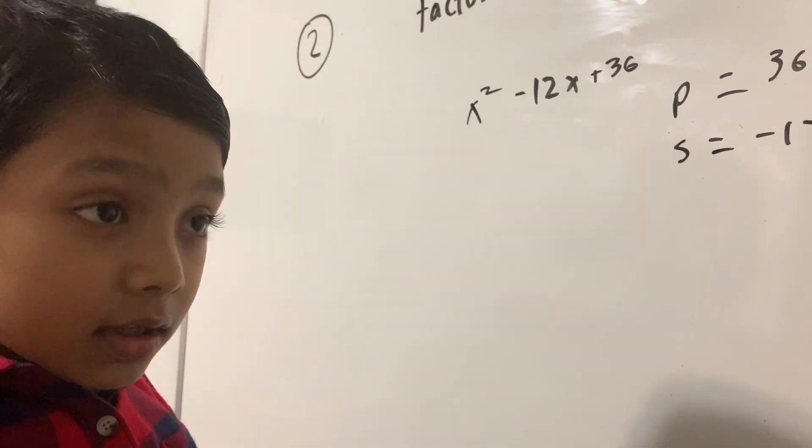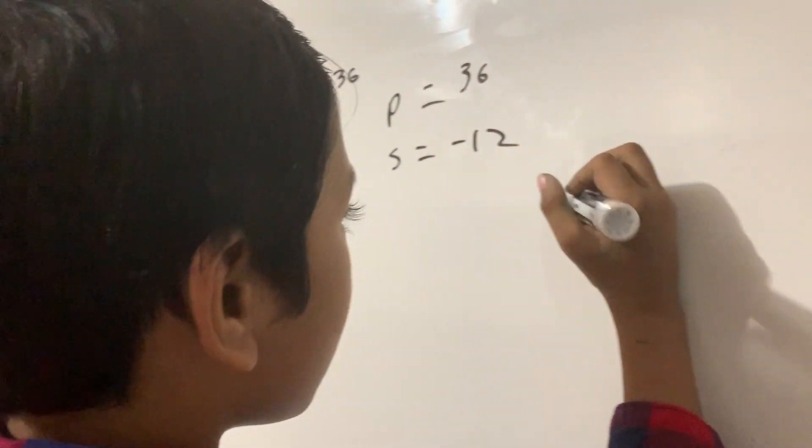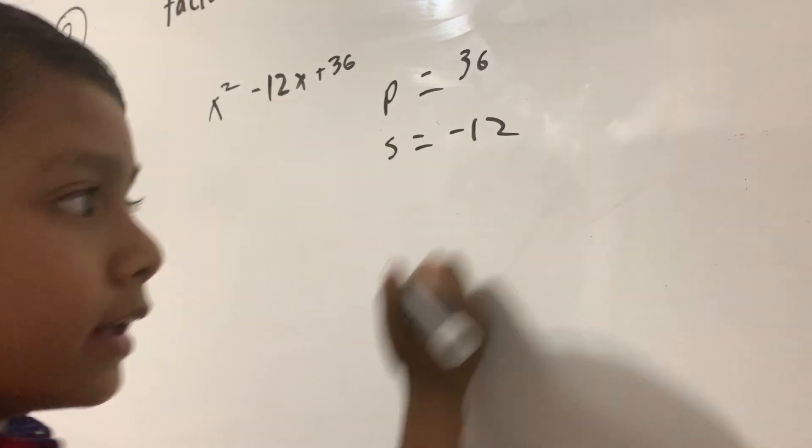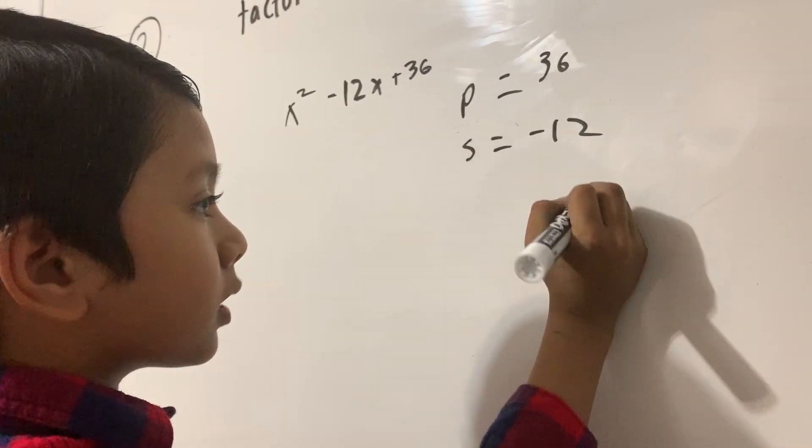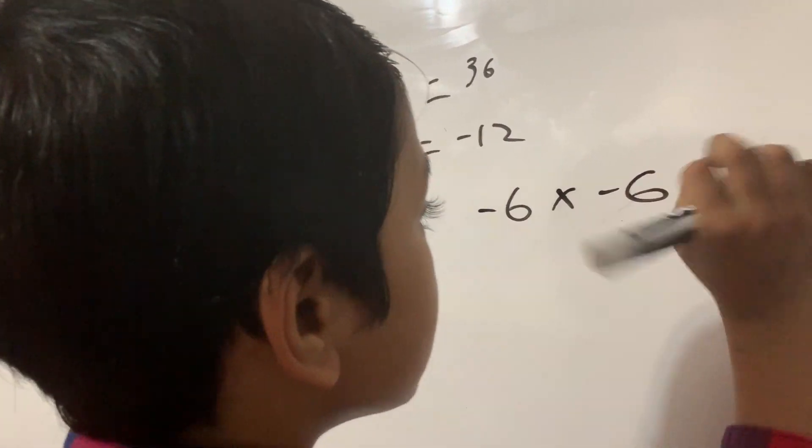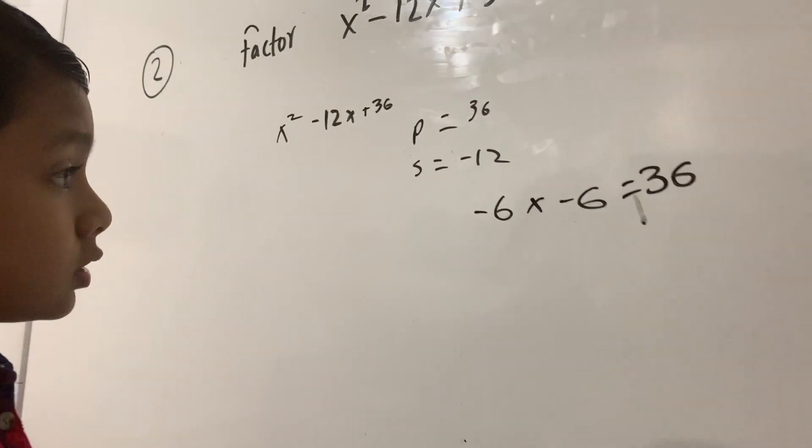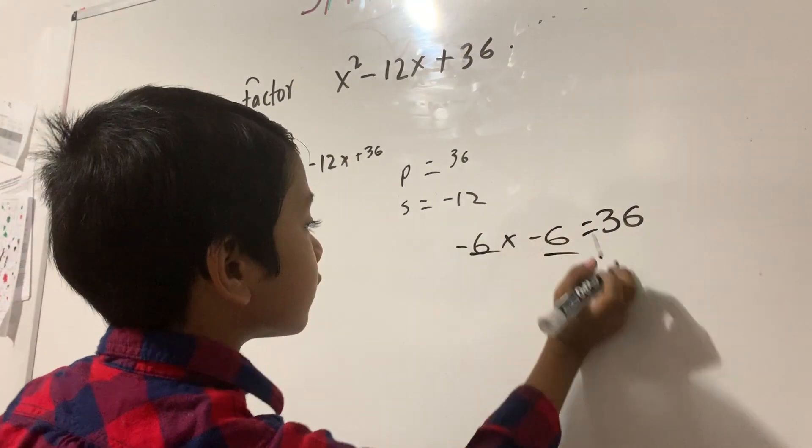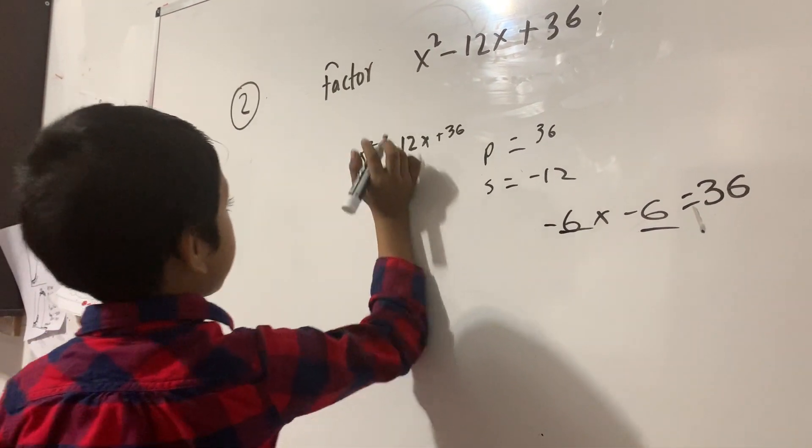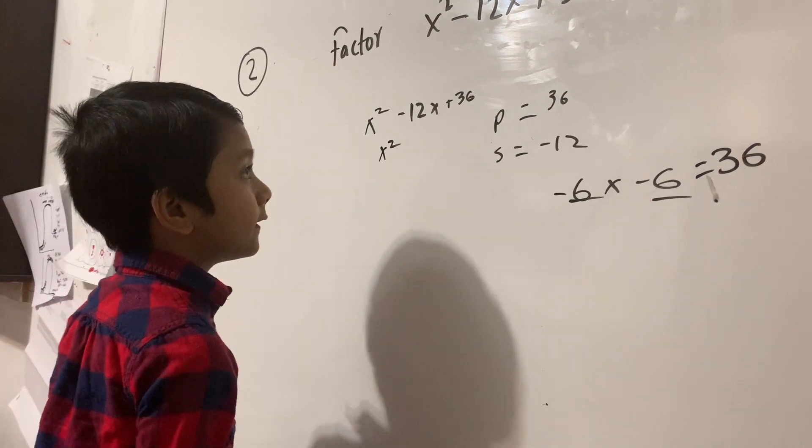Now, you might think that's hard, but that's easy. Remember that a negative number multiplied an even number of times will result in a positive number. So this example right here, that's what we need. Minus 6x minus 6x makes minus 12x, and they multiply to 36.